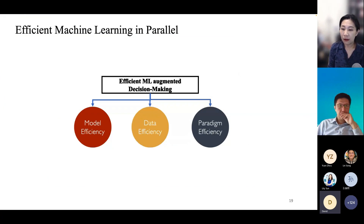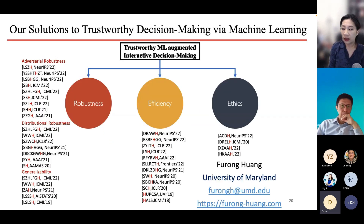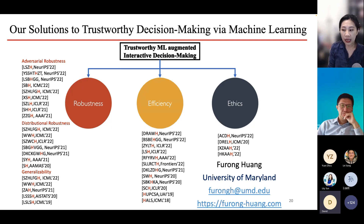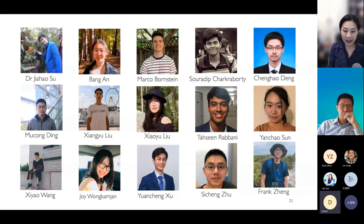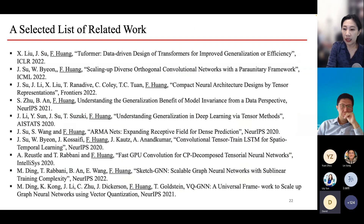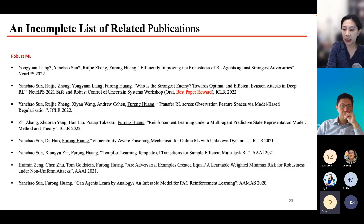To summarize, I talked about recent progress in my group on efficient machine learning. Specifically, I covered model efficiency, data efficiency, and paradigm efficiency. Overall, I work on trustworthy decision making using machine learning, and I care about robustness — specifically generalizability, distributional robustness, and adversarial robustness. I also care about efficiency, which was the major topic today. In addition, I care about ethics, for example data privacy and algorithmic fairness. Thank you to all my students — without them none of this would be possible.